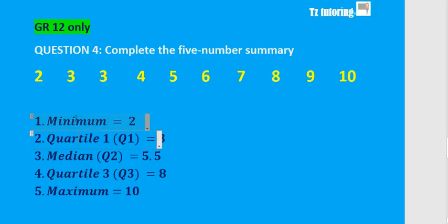It's basically the minimum, quartile one or first quartile, the median or the middle, quartile three or third quartile, and then the maximum. The minimum should be straightforward—it's the smallest number, which is two. And the maximum should also be straightforward—it's the last number, which is ten.